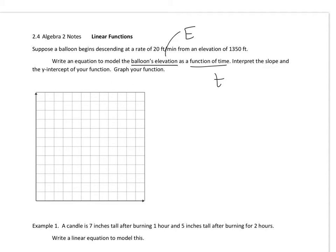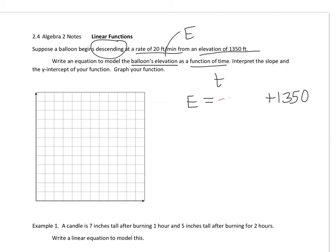The first thing we're going to do is come up with the function or equation to model it. The elevation has to equal a starting elevation of 1350 — that's above ground or sea level; if it were below sea level it would be negative. It's descending at a rate, and descending means going down, so at a rate of 20 feet per minute. Whenever you have a rate, this is your slope, so it's negative 20 feet per minute.